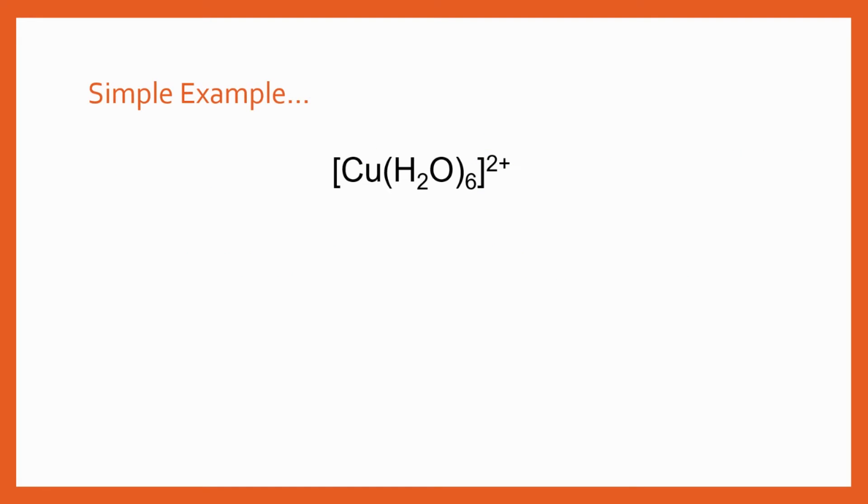And for the first example I'm going to make it as easy as possible. I like to start with really simple examples to be really clear about how to do these and then slowly build up to more complicated examples to focus on just one thing at a time. So here is a simple complex ion [Cu(H2O)6]2+ and we can just use what we've looked at before to break it down and work out a name.